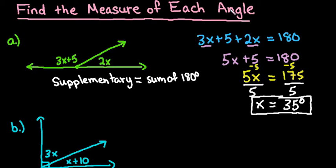But remember, it wants the measure of each angle, so we want to find what does this part right here equal, and what does this part right here equal. So we have to take x and plug it back in. So for this part I'm going to do 2 times 35, and so we find out that this one is 70.